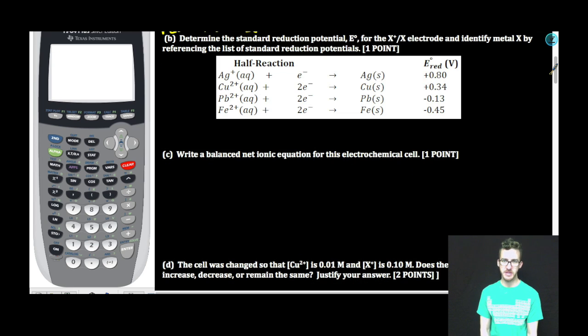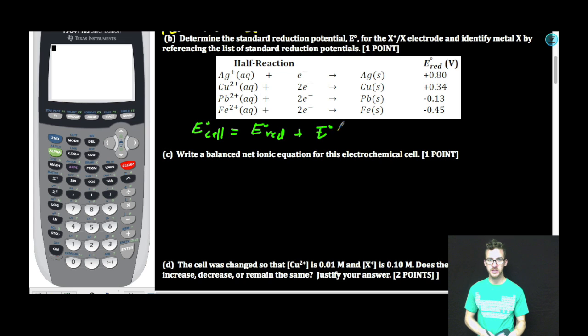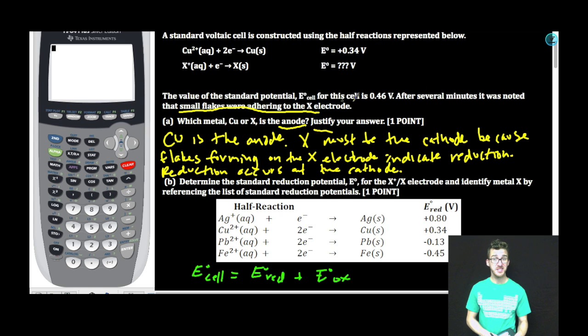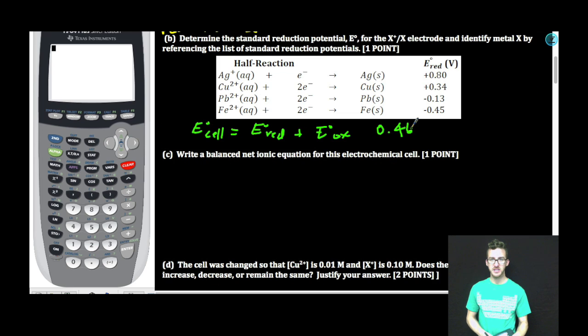Determine the standard reduction potential for the X ion X electrode, and identify metal X by referencing the list of standard reduction potentials. Let's recall the cell potential equal to reduction potential plus oxidation potential. We know the cell potential for this cell is 0.46 volts.